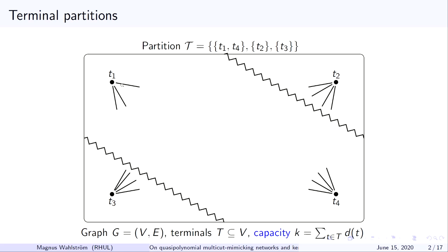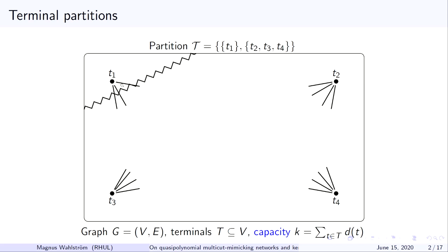Or, you know, even less demanding, we're only required to isolate one terminal, T1, from the other three terminals, so there is an exponential number of such possible partitions you could be asked in the future to implement, and we want to preserve for every such possible partition request the minimum number of edges that you have to cut in the graph to realize this partition.